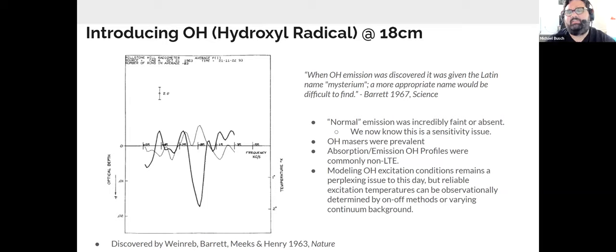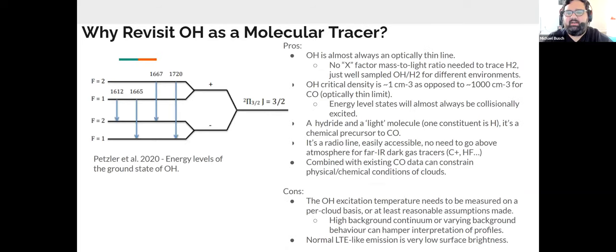Masers were more prevalent, the much brighter phenomenon. Absorption surveys were carried out. It was noticed that excitation of OH was very complex because there were conjugate profiles between even the ground state lines. OH has four lines, and these lines go from emission to absorption depending on excitation conditions and the background continuum. Modeling OH excitation continues to be a perplexing issue to this day. But reliable excitation temperatures can be determined from methods observationally, such as the on and off method or varying the continuum background.